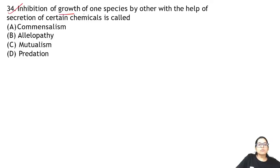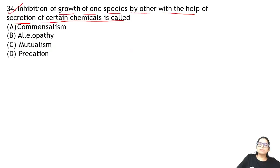Question 34: inhibition of growth of one species by another through secretion of certain chemicals — this is called allelopathy. Think of allopathic medicine: an organism like an antibiotic produces a chemical that stops the growth of another. So the answer for 34 is B.